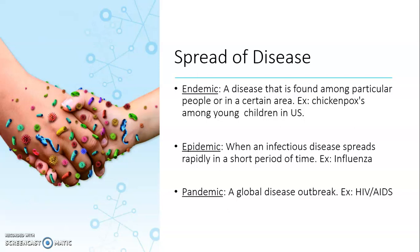The last type of spread of disease is a pandemic. This is a global outbreak of a disease that is found in different countries, such as the U.K., the U.S.A., Europe, Asia, etc. An example of a pandemic is HIV and AIDS.